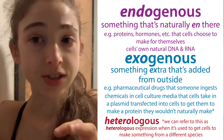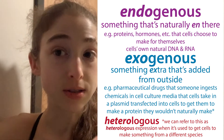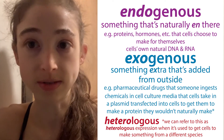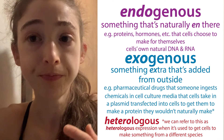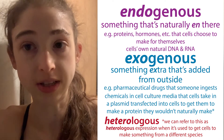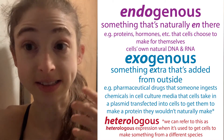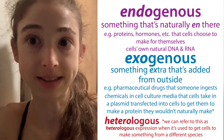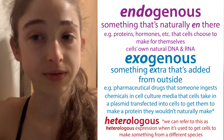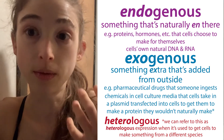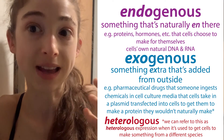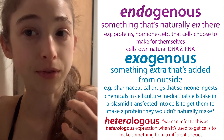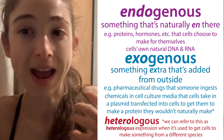So basically, endogenous is what the cells normally have, normally make, and normally do — this includes proteins, DNA, hormones, and other things naturally present. Exogenous is something artificially added: DNA that a cell wouldn't normally have, a drug added to cells or ingested by someone. Even if we add something that cells normally make, if we're adding it from an exogenous source, we're adding extra on top of what the cells would produce themselves.